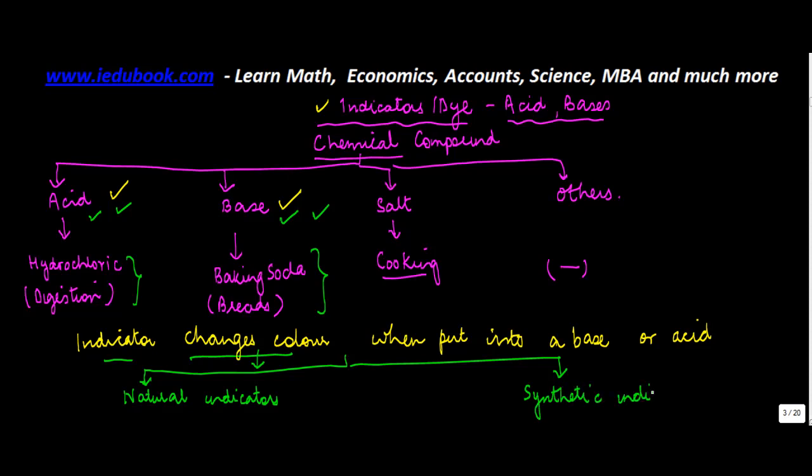In the category of natural indicators, you have litmus and turmeric. For synthetic indicators, an example is phenolphthalein. How and what these do is something we will see in detail when we study each one of them.